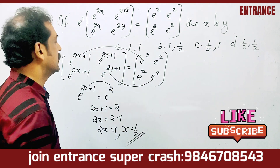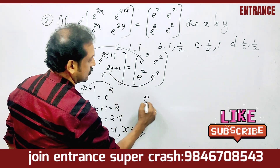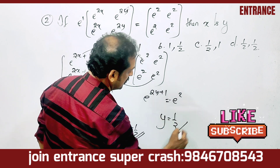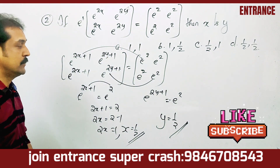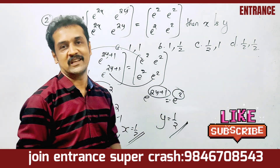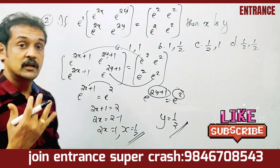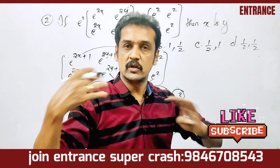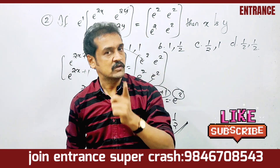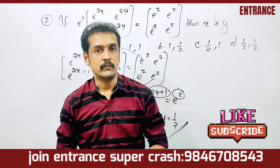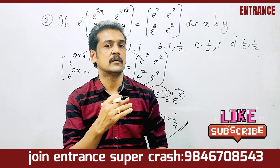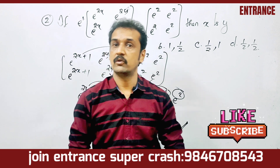Corresponding elements are also equal, so 2y plus 1 is equal to 2. Solving: 2y plus 1 equals 2, giving us the value of y as well.